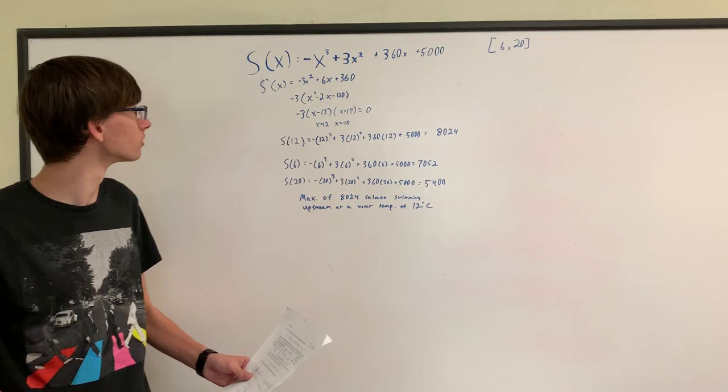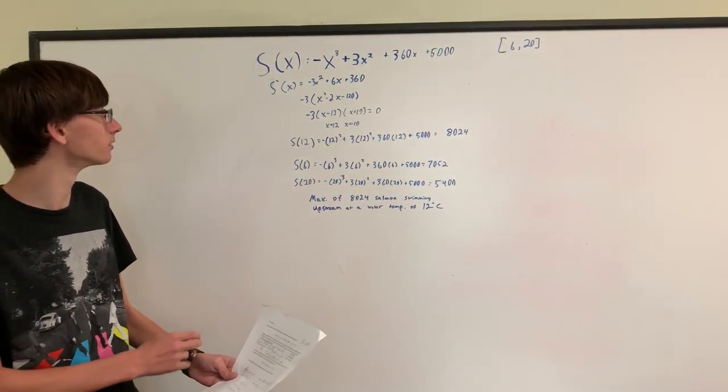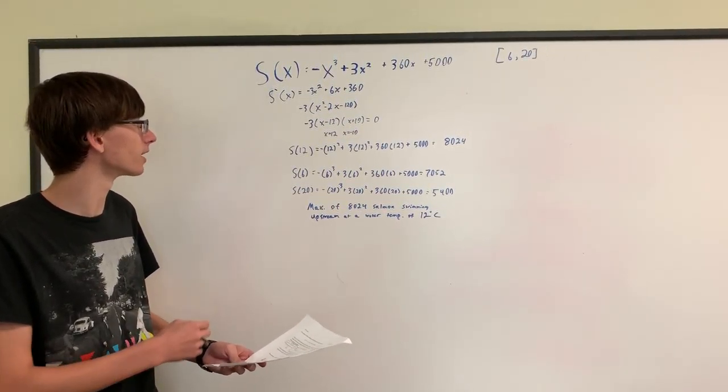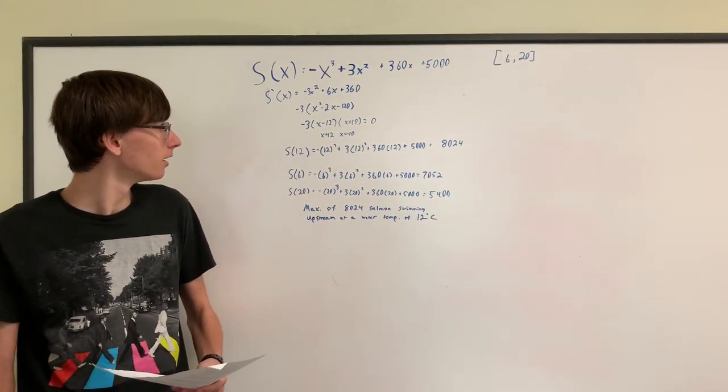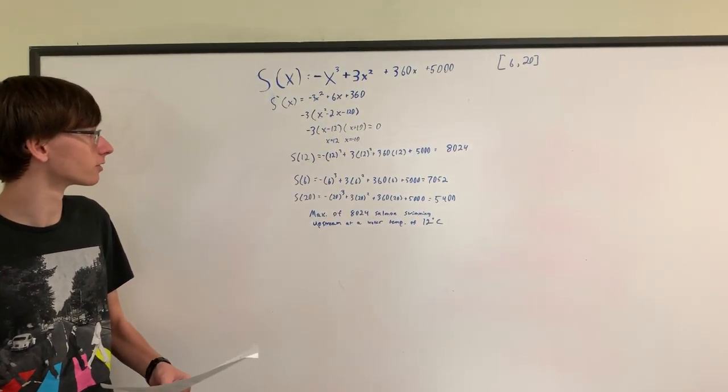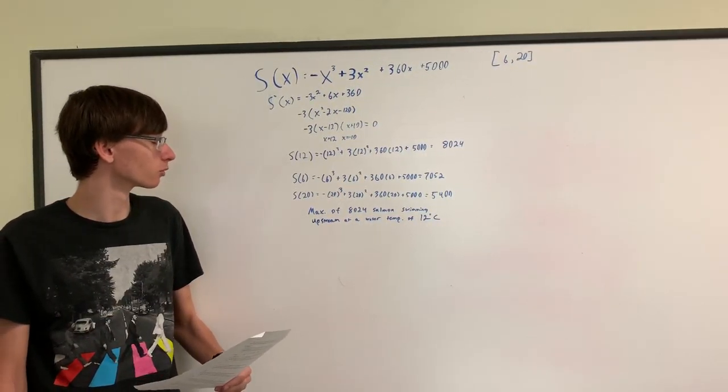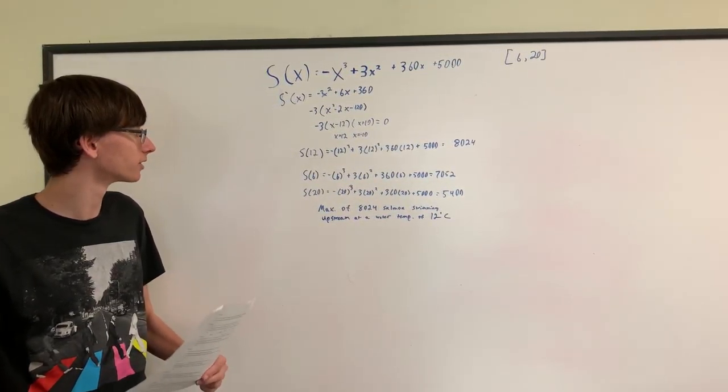To do so, we take the derivative of the original equation which then reduces to negative 3x squared plus 6x plus 360. And through the process of factorization, we find our x values of x equals 12 and x equals negative 10.